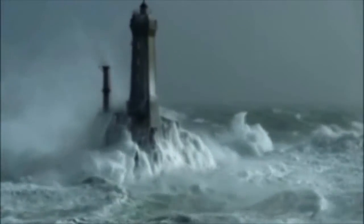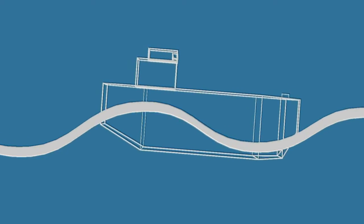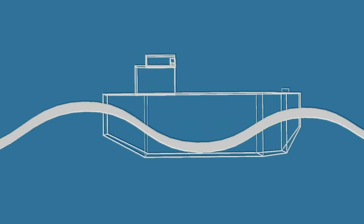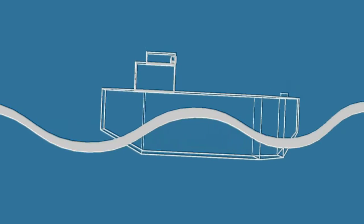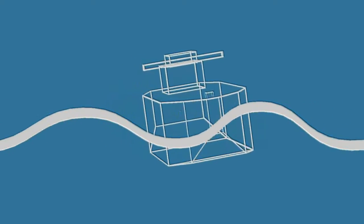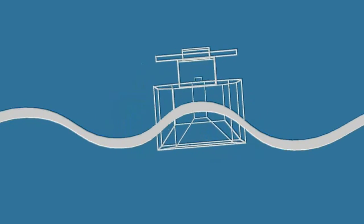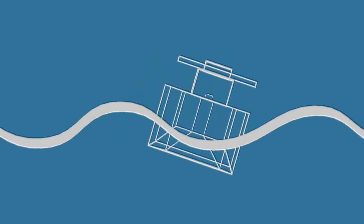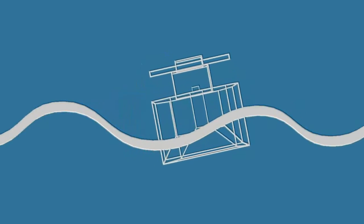If a ship loses power, practical experience as well as numerical simulations indicates that it will rapidly turn beam to the seas. In this condition, the vessel will start to roll violently, making it very difficult both to facilitate the repair, but also to connect the tow line.